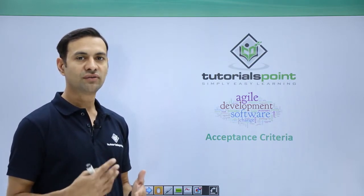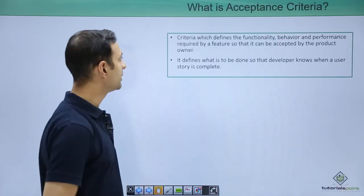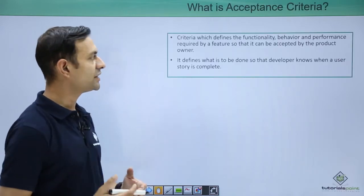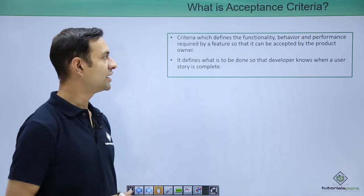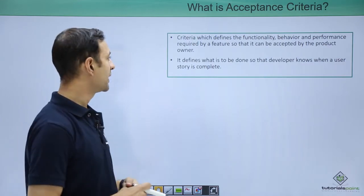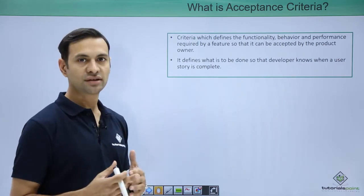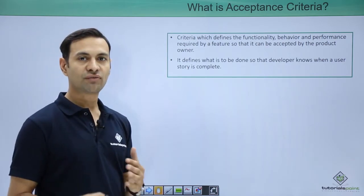Acceptance criteria defines the functionality, behavior, and performance required by a feature so that it can be accepted by the product owner or the client. It defines what is to be done so the developers know exactly when a user story is complete.